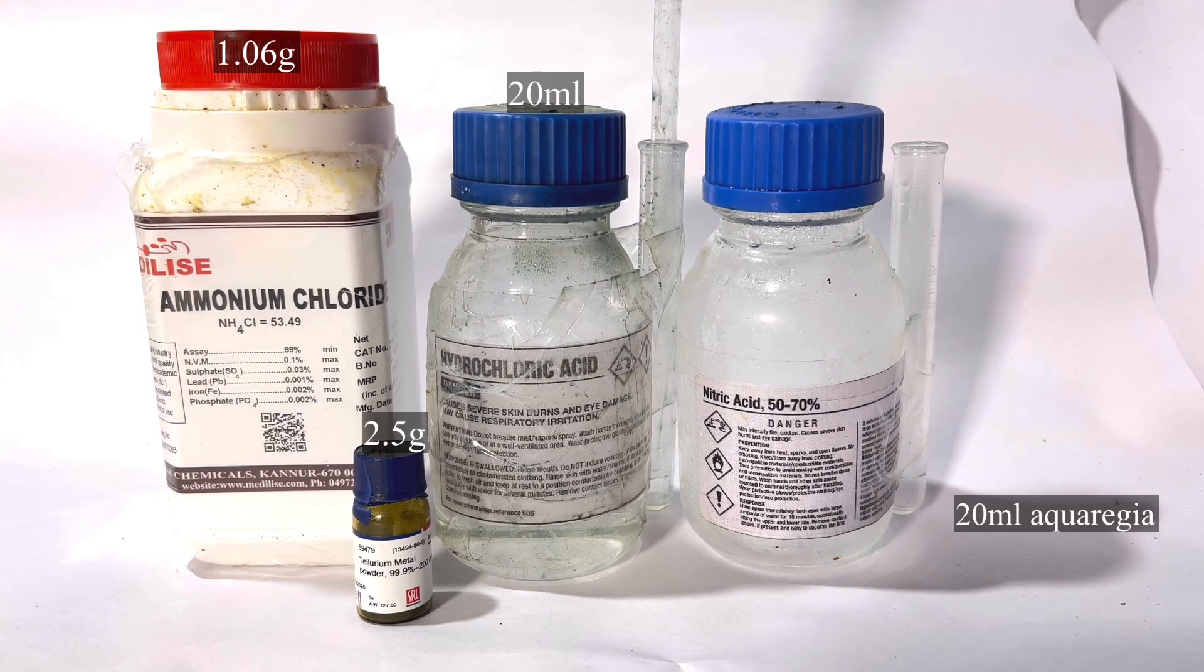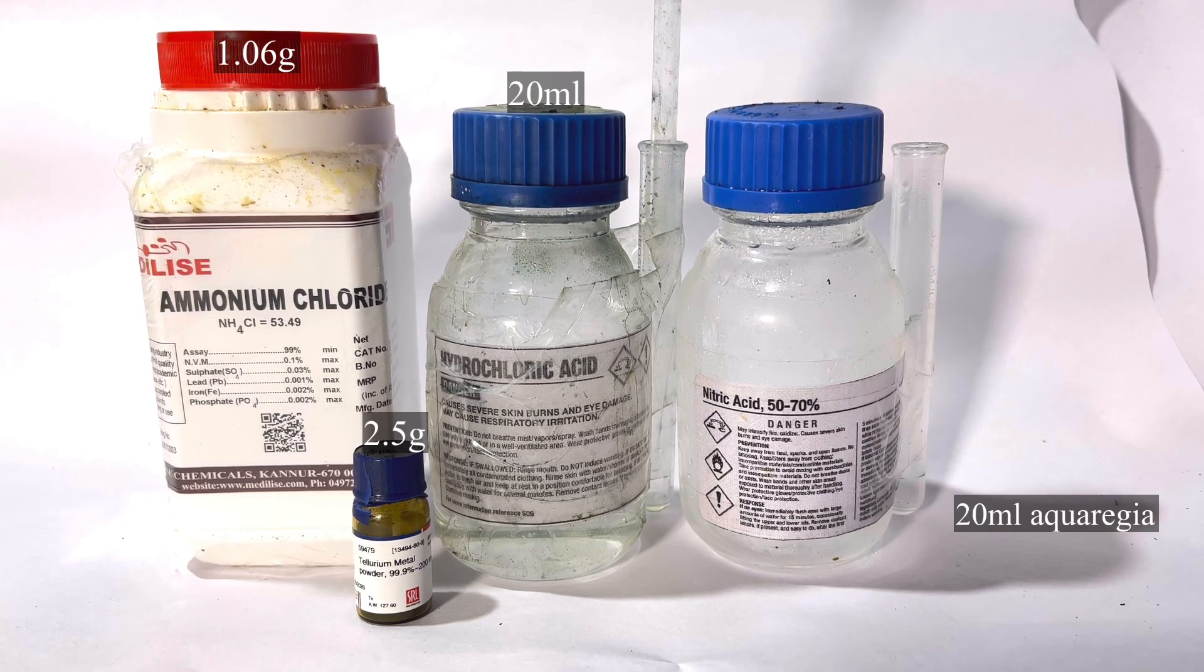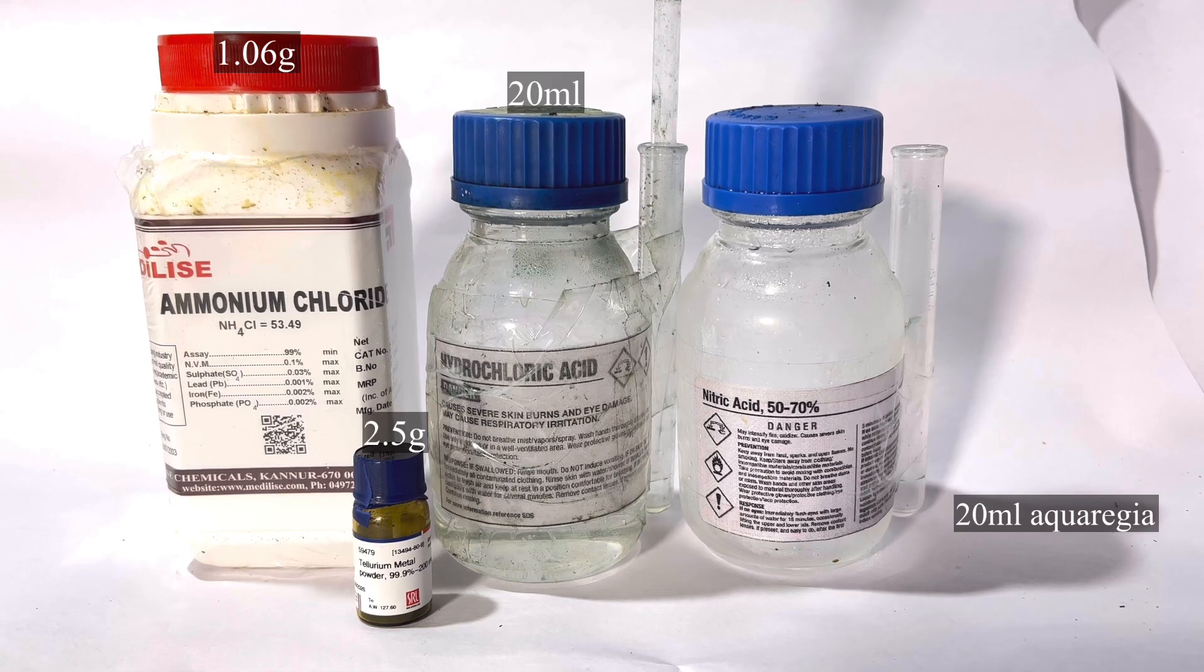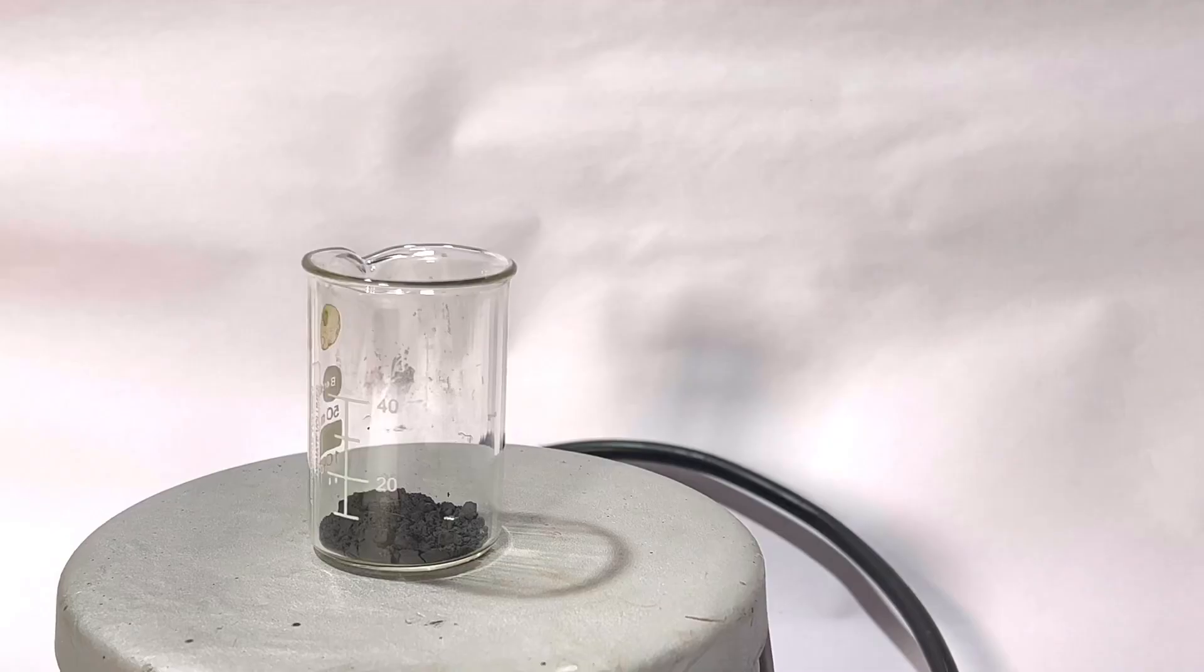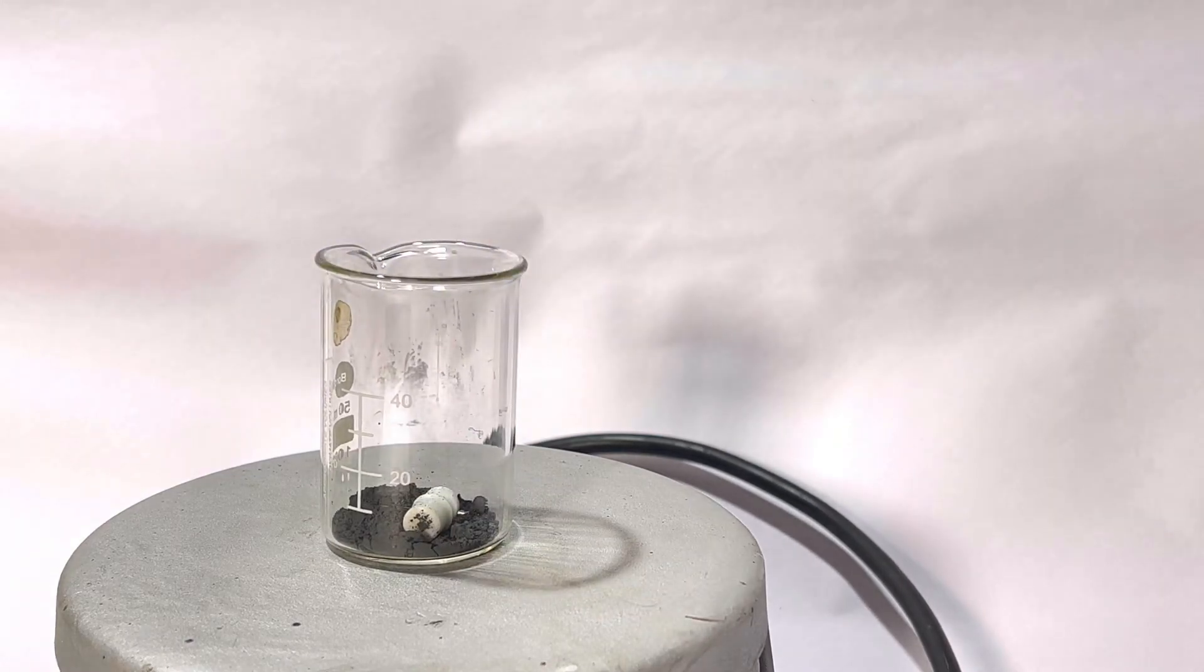To result in a clear solution, I used around 20 milliliters of concentrated 35% hydrochloric acid and 1.06 grams of ammonium chloride. Start by taking 1.5 grams of tellurium metal powder in a beaker with a stirring bar inside.